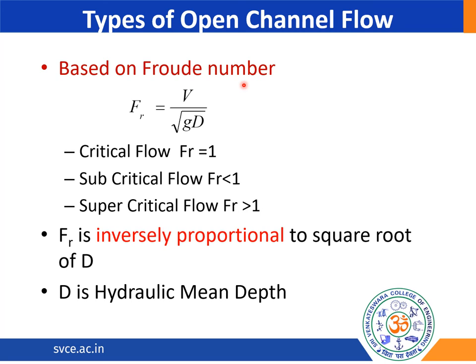Based on Froude number, the open channel flow is classified as critical flow, subcritical flow, and supercritical flow. The Froude number can be expressed as Fr = V divided by the square root of g times d, where V is the velocity of water in an open channel flow, g is acceleration due to gravity, and d is the hydraulic mean depth.